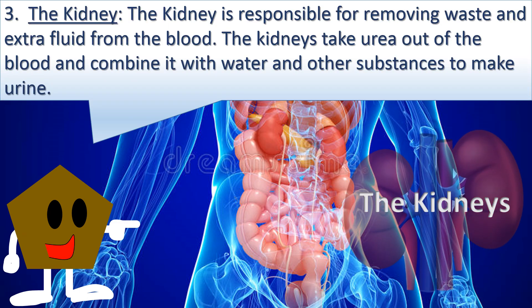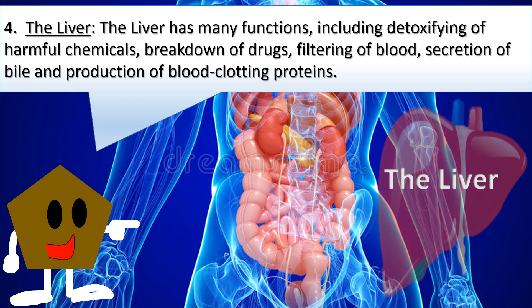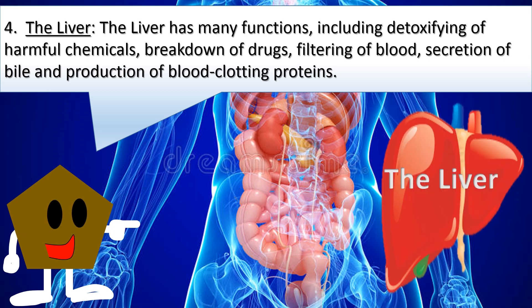3. The kidney is responsible for removing waste and extra fluid from the blood. The kidneys take waste out of the blood and combine it with water and other substances to make urine. 4. The liver has many functions including detoxifying harmful chemicals, breakdown of drugs, filtering of blood, secretion of bile, and production of blood clotting proteins.